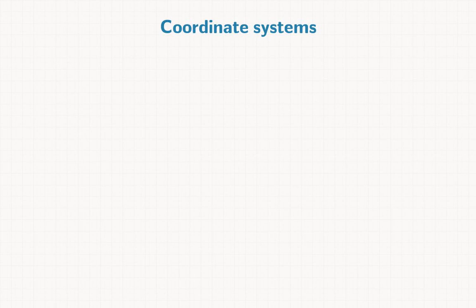A coordinate system is a way of describing points in space using numbers, or pairs and triples of numbers.